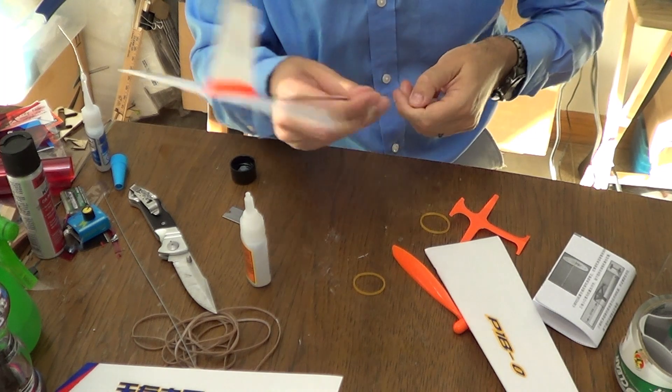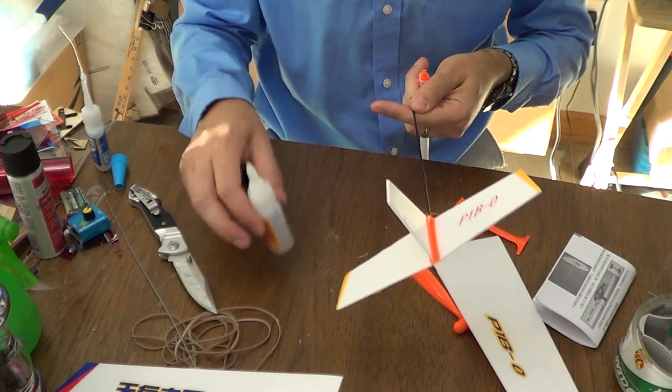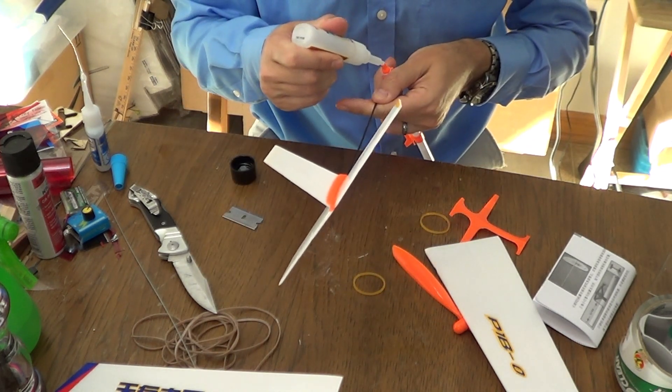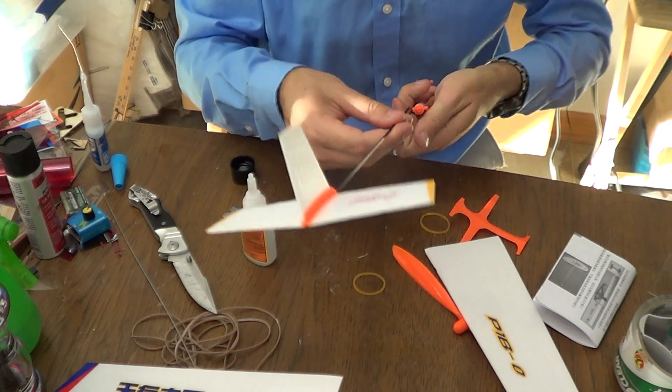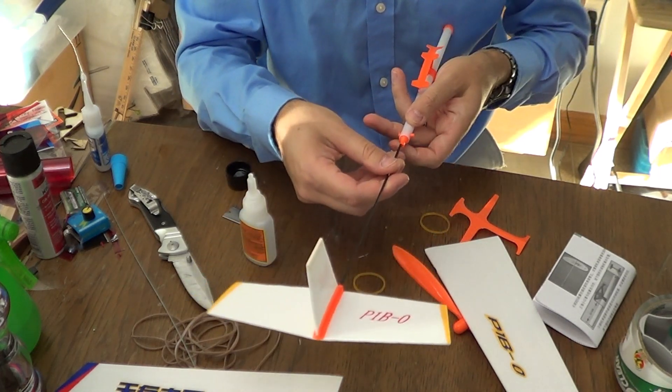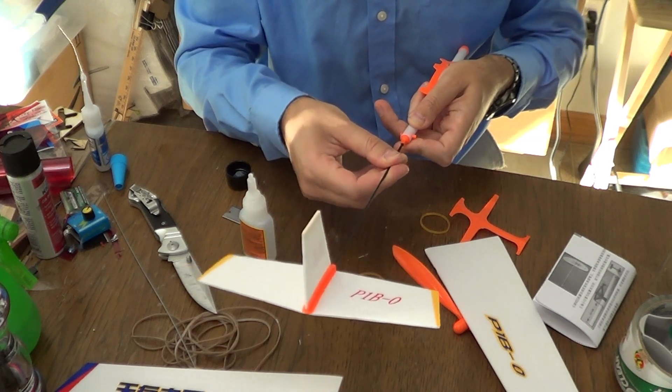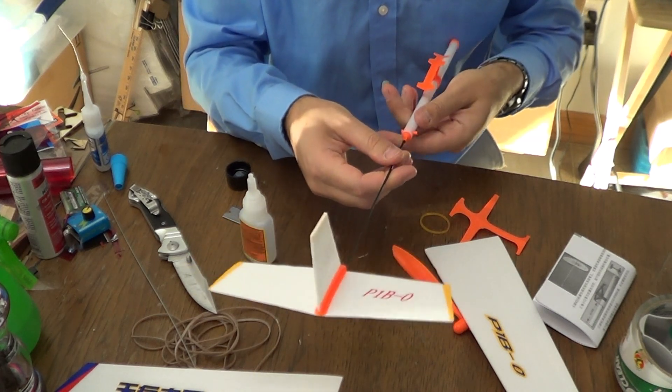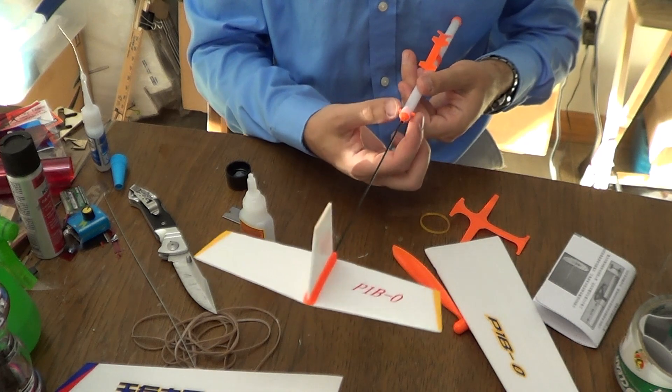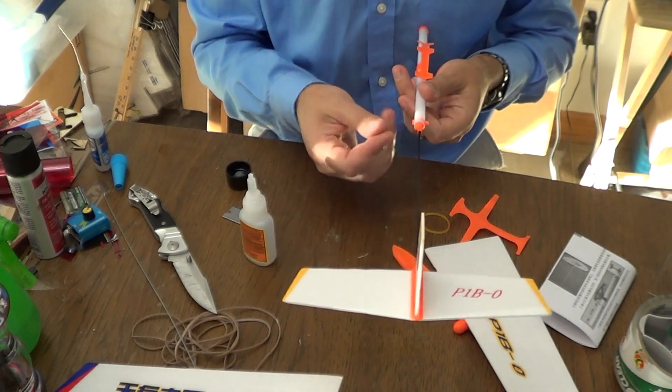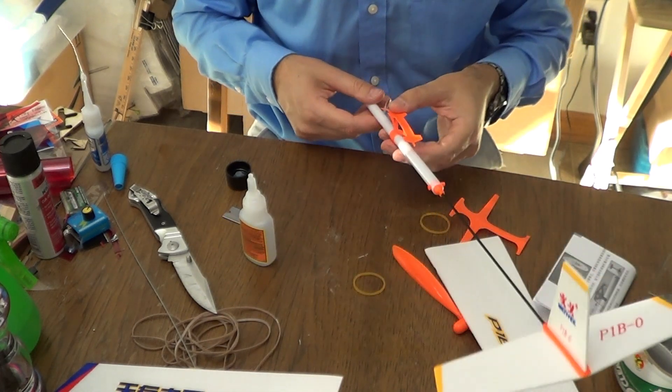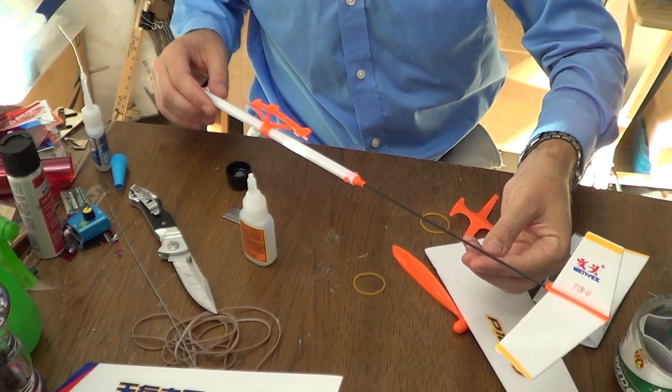And this just slides right in there. And I do recommend actually gluing this in place because it will loosen up over time. Basically, you're just going to slide this until the boom meets up with the end there. Now the next thing I would recommend is go ahead and glue this boom into the back here. And again, make sure your orientation is correct. Peg is horizontal.